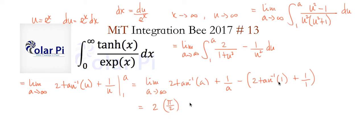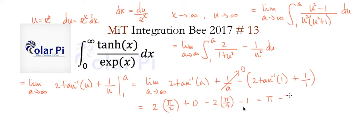Then we subtract two times arctan(1) = π/4, giving 2·(π/4), and subtract one. Cleaning this up: 2·(π/2) = π, minus 2·(π/4) = π/2, minus one. So π − π/2 − 1 simplifies to π/2 − 1, our final answer.